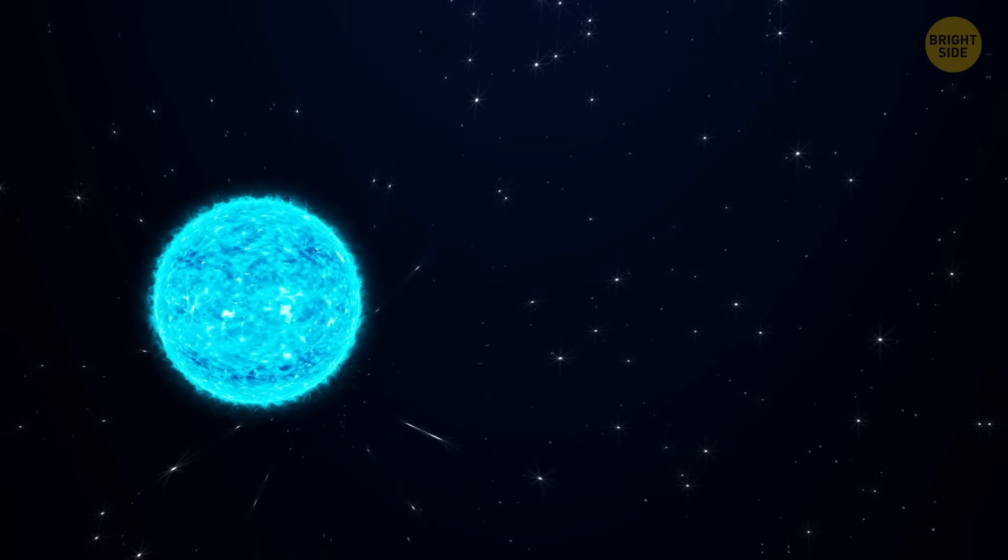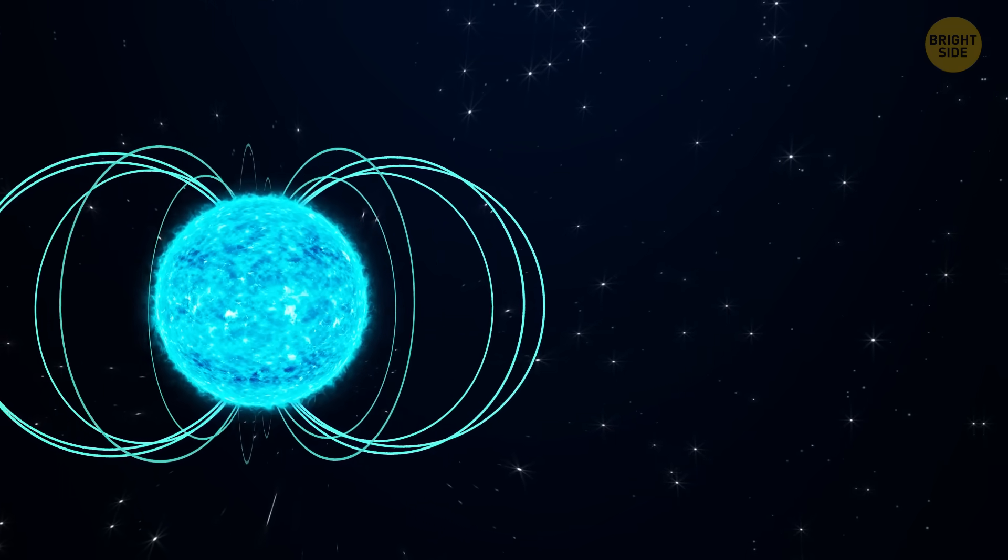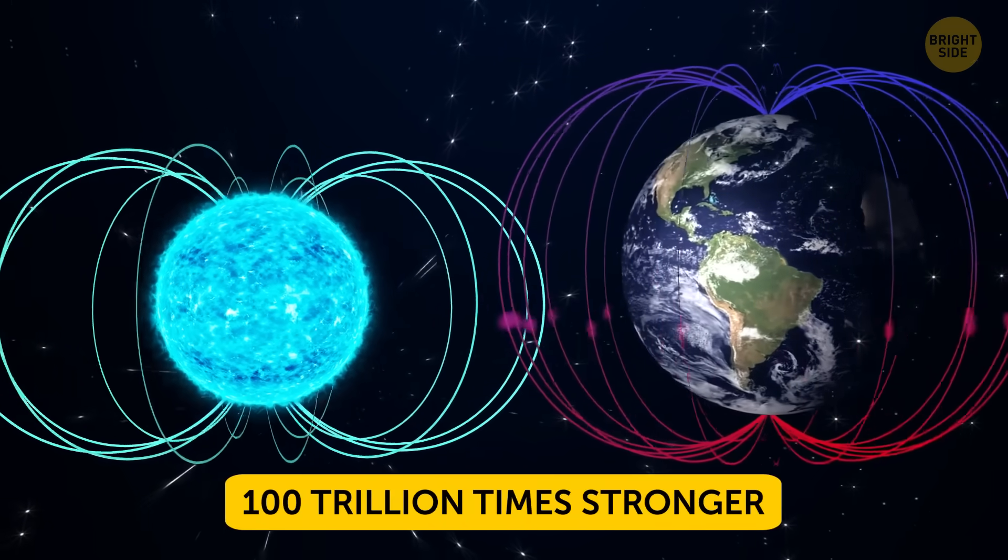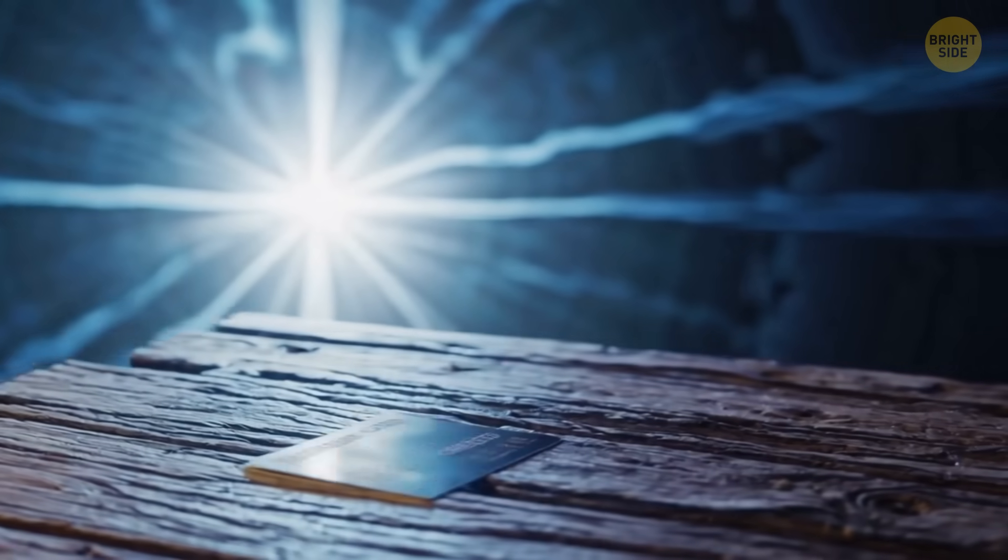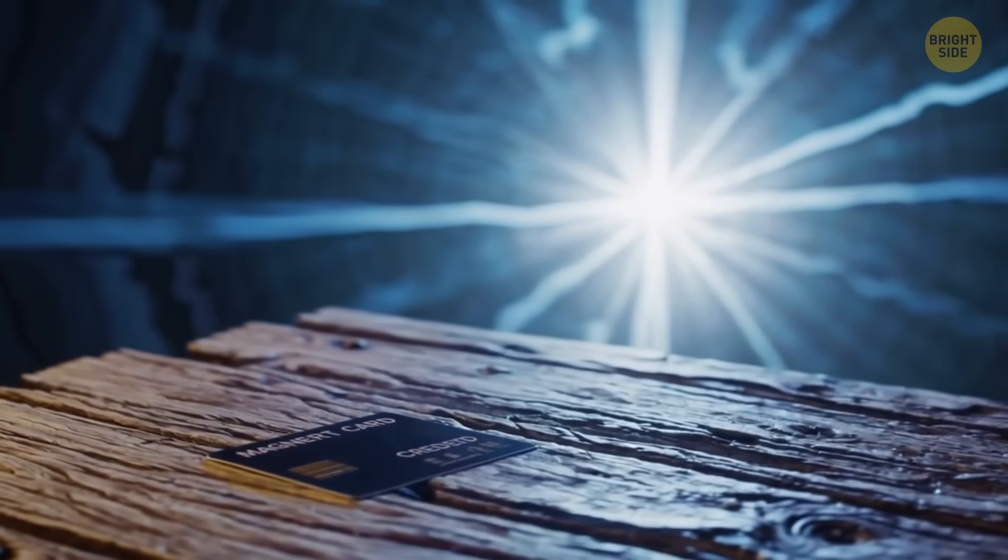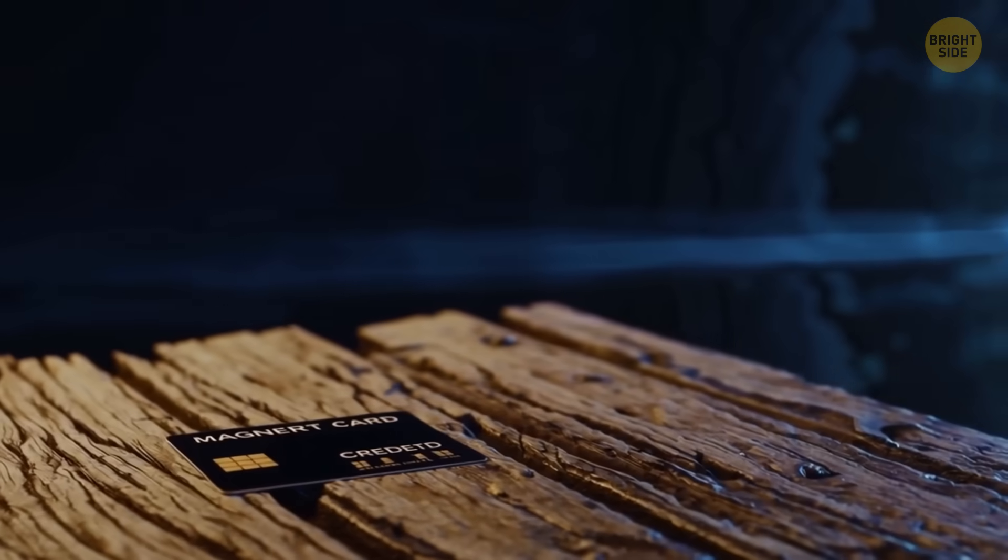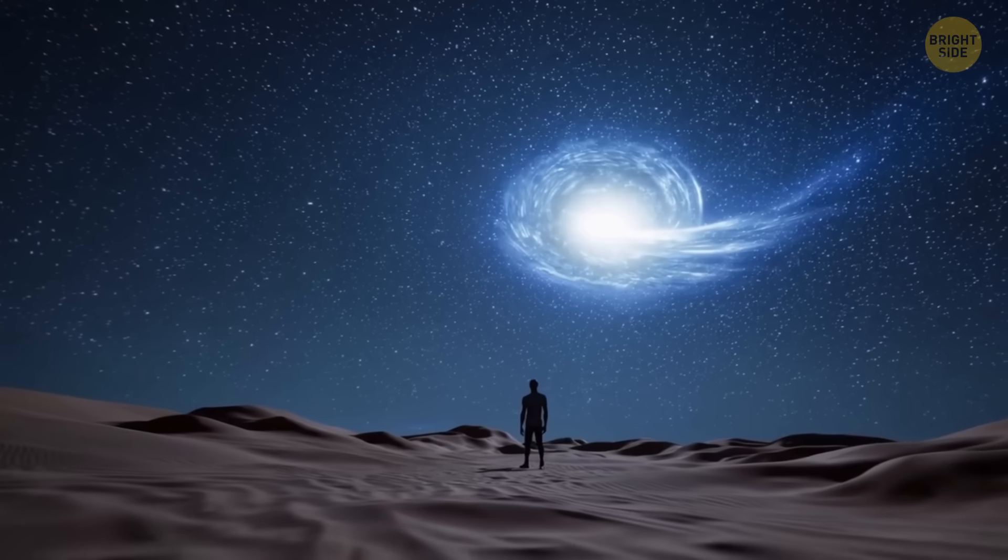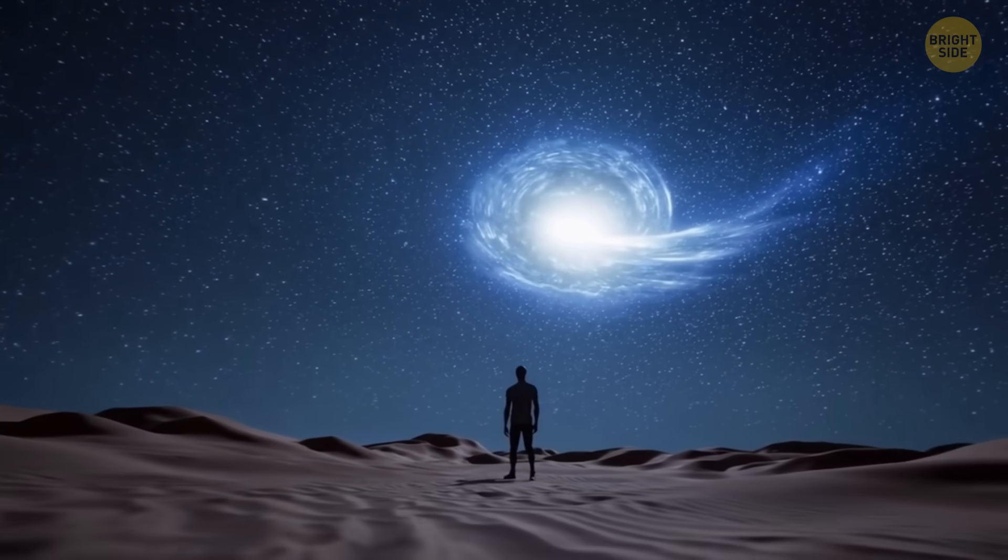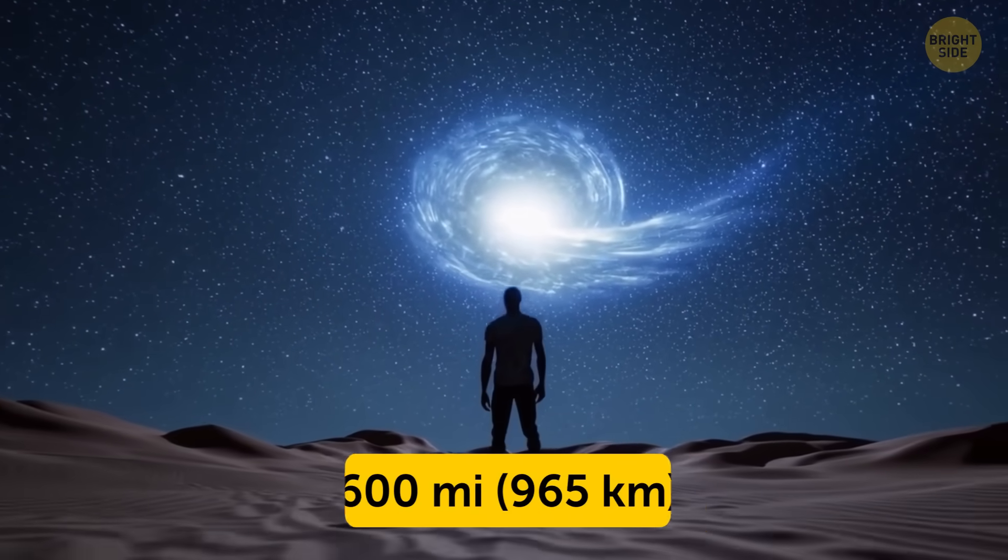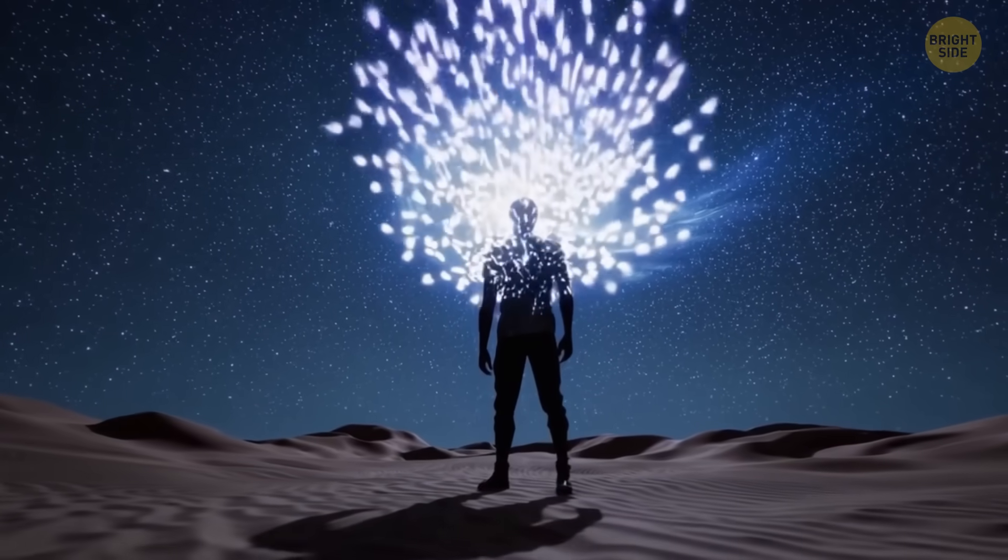Magnetars also have an incredibly strong magnetic field. The one our zombie guy has is 100 trillion times stronger than Earth's. That's so strong that if the magnetar came close to Earth, it could wipe out every credit card on the planet just from its magnetism. And if a person got too close to a magnetar, like 600 miles or so, it could pull their very atoms apart.